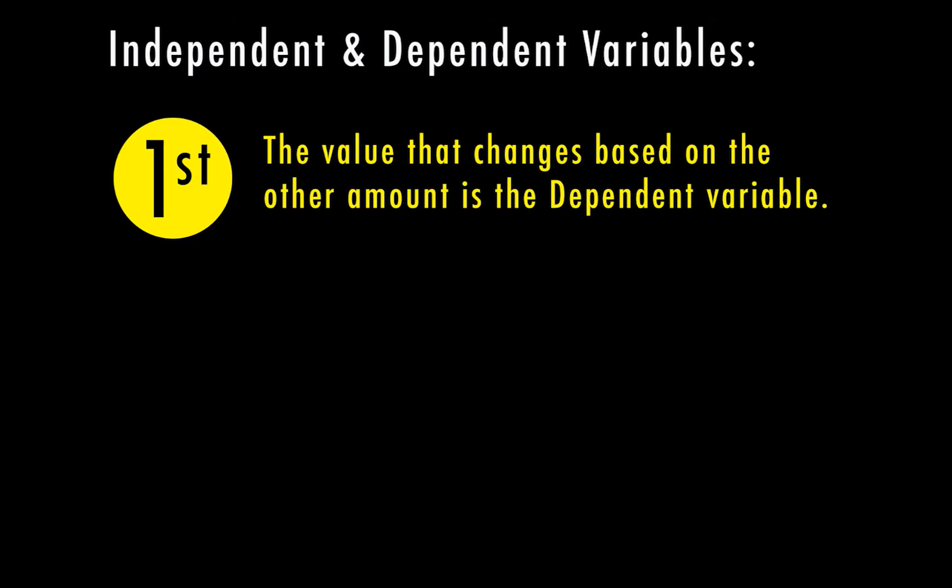The first thing you need to know is that the value that changes based on the other amount is the dependent variable. If something is dependent then it depends on the other thing involved.